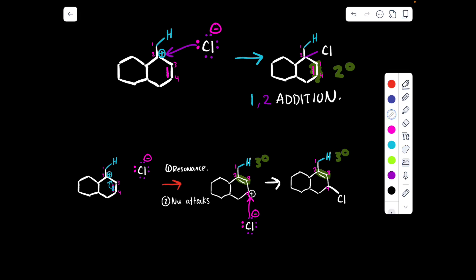So now we can see, in the first example, in the kinetic case, the hydrogen added to carbon number 1, and the chlorine added to carbon number 2. In the second example, in the thermodynamic example, the hydrogen still added to carbon number 1, but now the chlorine adds to carbon number 4. So 1,4 addition, boom.